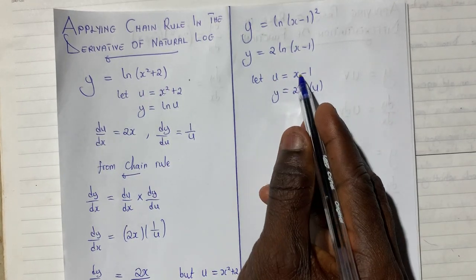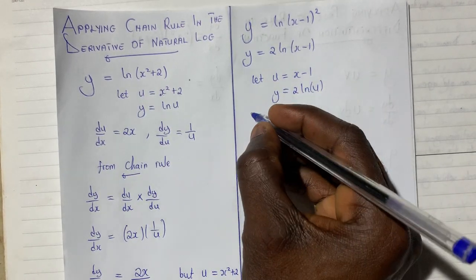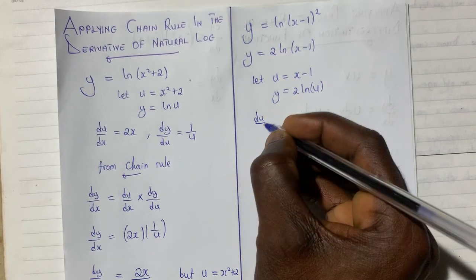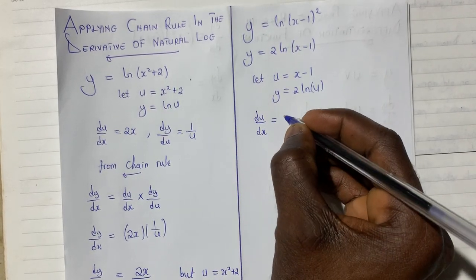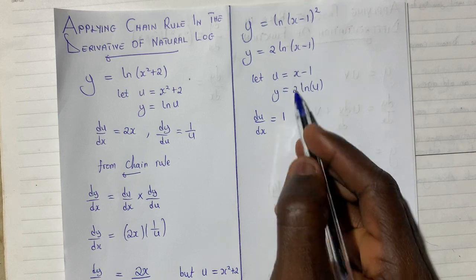Now we differentiate u with respect to x. We can get du dx giving us 1. When I differentiate this, I will get 1.